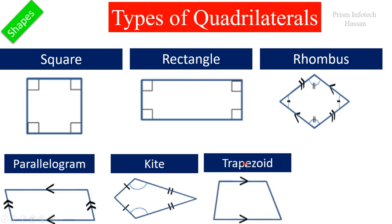Next one is a trapezoid. In this shape, only one pair of opposite sides are parallel.